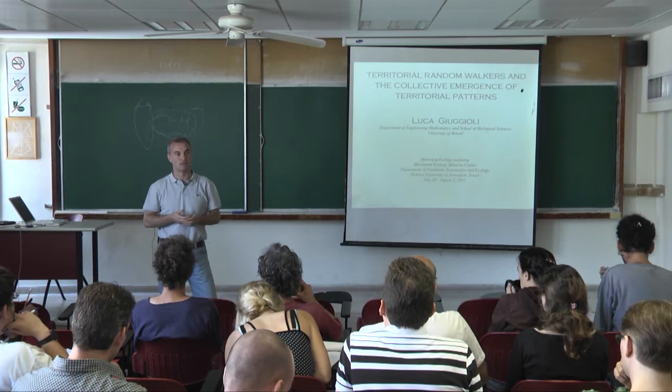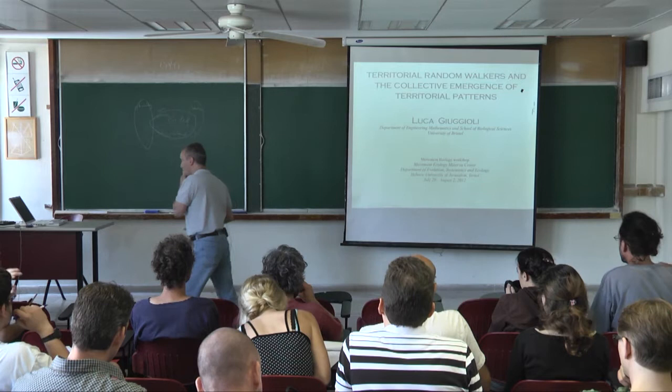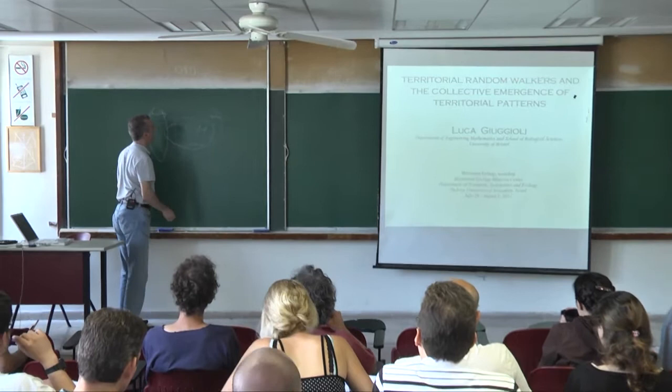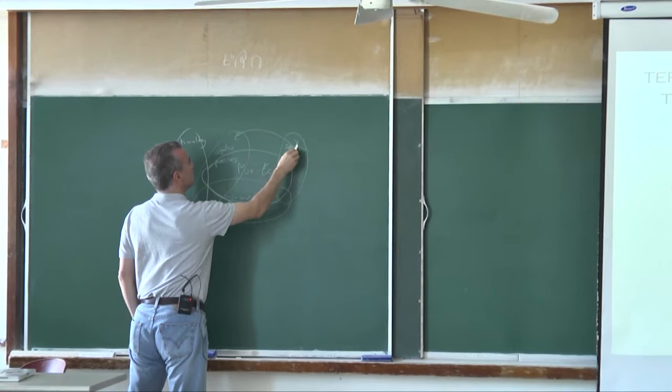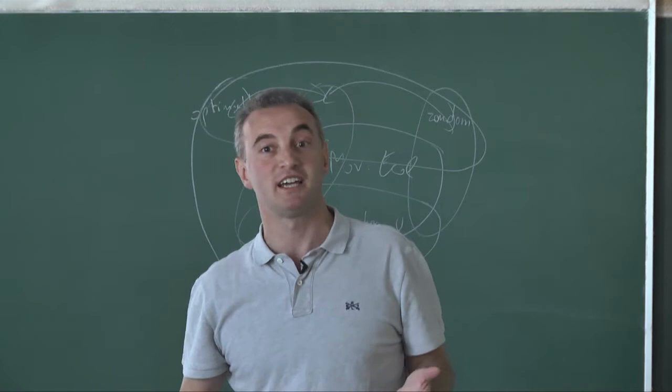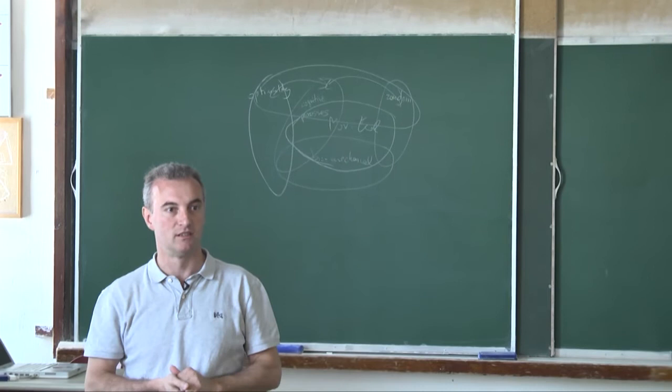What I'm going to tell you today is about developing some sort of theory which connects these levels, with a bit of optimality — though I won't talk too much about that. It's about an object which sits somewhere in between. It's about the formation of territories, a very general process. I'll focus on scent-marking animals.